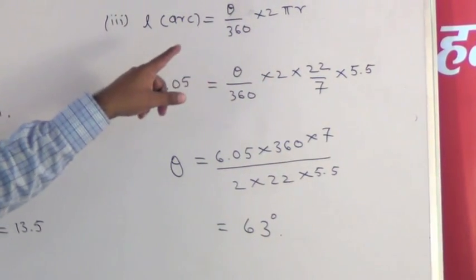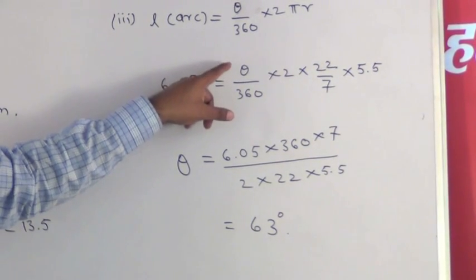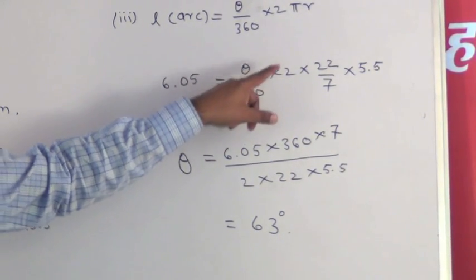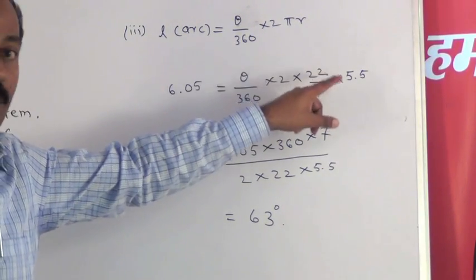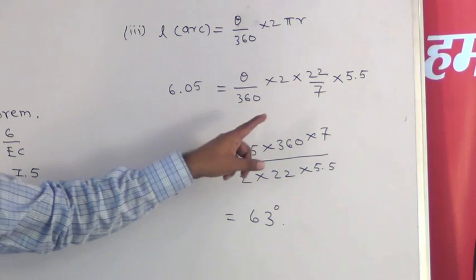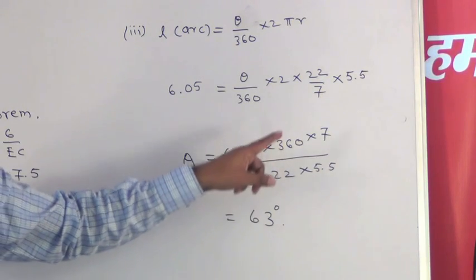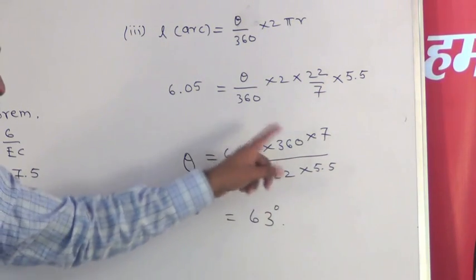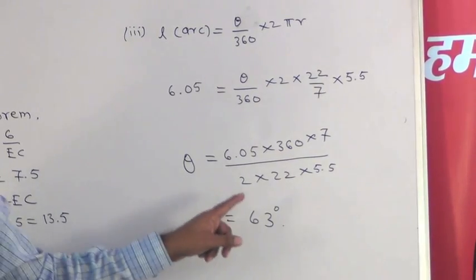Now, the formula for length of arc is equal to theta upon 360 into 2 pi r. Substituting the given values, length of arc is 6.05, theta we have to find out upon 360 into 2 into 22 upon 7 that is the value of pi and radius 5.5. So, theta is equal to 6.05 into 360 into 7 divided by 2 into 22 into 5.5. And after solving this, we get 63. So, measure of angle theta is 63 degrees.